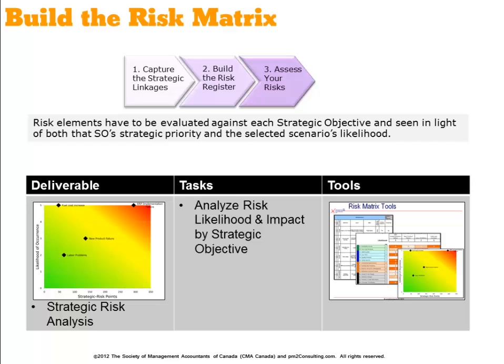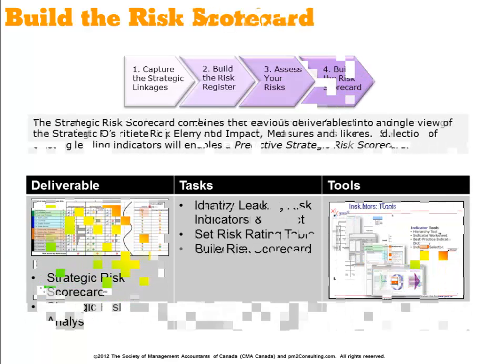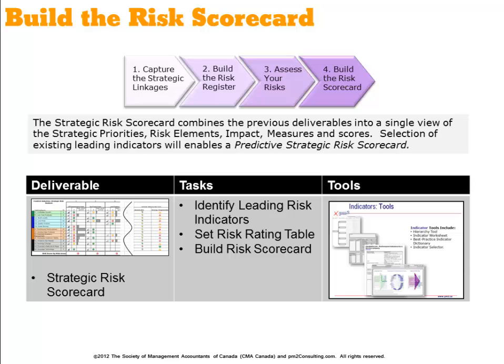From there we'll assess your risks. We'll be taking a look at each risk and its impact on each strategic objective. Based on your priorities, we'll be able to determine where the most volatile risks exist in your organization. Now that doesn't necessarily mean they're occurring — the final step will help reveal that. By adding performance measures to this framework and building it out as a scorecard, we'll be able to build up a radar device, a sonar capability, inside your organization to see based on performance where risk may be beginning to occur.